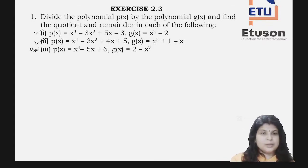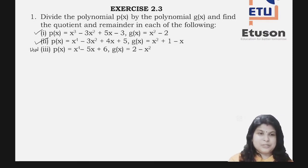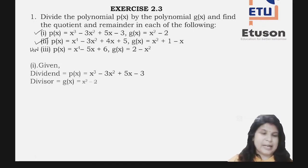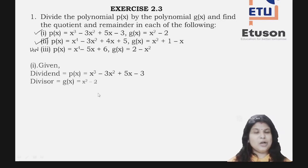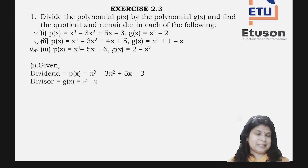So in the first question, P(x) = x³ - 3x² + 5x - 3, so your dividend is x³ - 3x² + 5x - 3 and your divisor is x² - 2. We are going to use the normal long division method. You have to divide the highest degree of the divisor with that of the highest degree of the dividend.